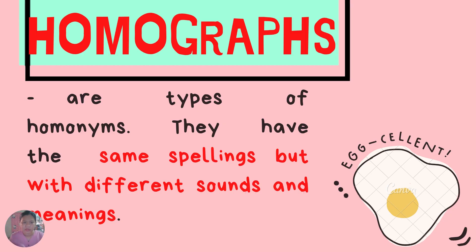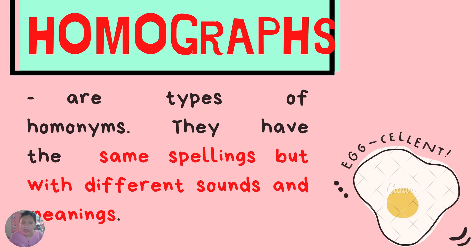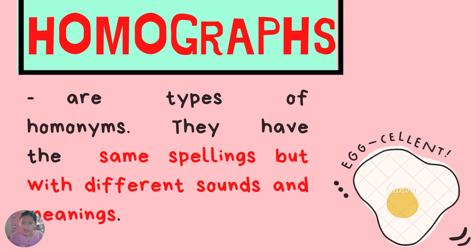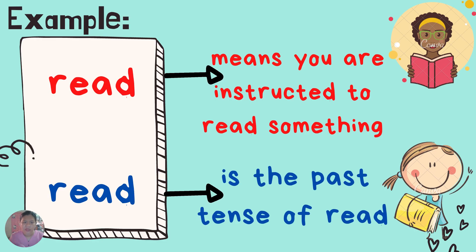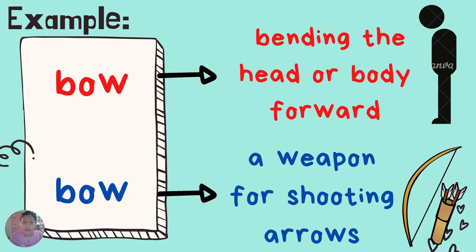Homographs. What are homographs? Homographs are types of homonyms. They have the same spellings but with different sounds and meaning. Example: read and read. Read means you are instructed to read something, while read is the past tense of read. Read and read are homographs — they have the same spelling but with different sounds and meaning. Another example: bow and bow. Bow means bending the head or body forward. Bow means a weapon for shooting arrows. Bow and bow are homographs with the same spelling but different sounds and meaning.